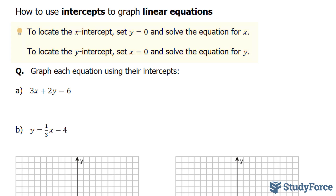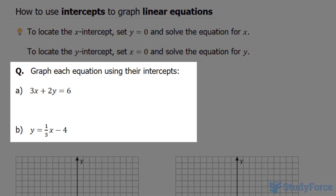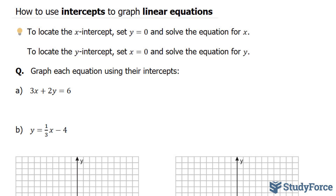That being said, the question reads: graph each equation using their intercepts. Starting with A, we have 3x plus 2y is equal to 6.